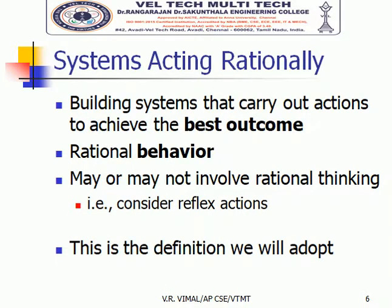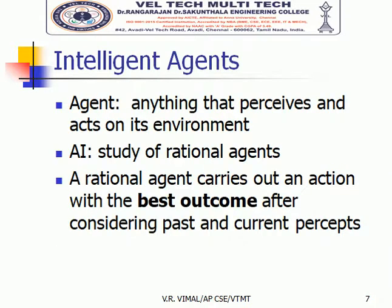A system acting rationally will also try to produce the best outcome. Whatever the percept sequence given to it, it will try to maximize its output, producing the best result for the current percept sequence. It will also use syllogisms or the laws of thought for performing its actions.